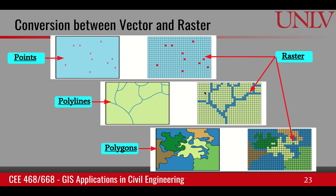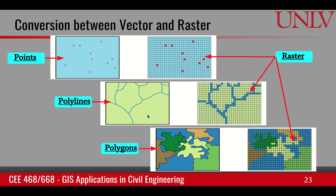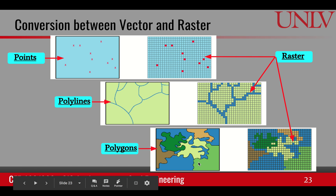Often we need everything in a single format for modeling, and in that case we can convert back and forth. For example, if we are overlaying data to find where certain areas overlap, vector data would be much more useful and we would convert everything into the vector data model. On the other hand, if we are doing calculations such as adding or multiplying matrices, raster data has advantages, and we would convert all vectors into a raster dataset.